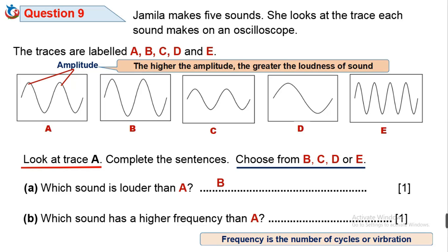Back to trace A. The green line is one frequency and the blue line is also one frequency. So trace A has two frequencies.